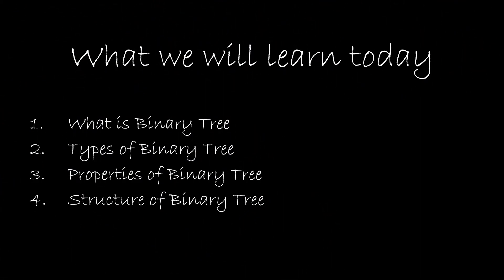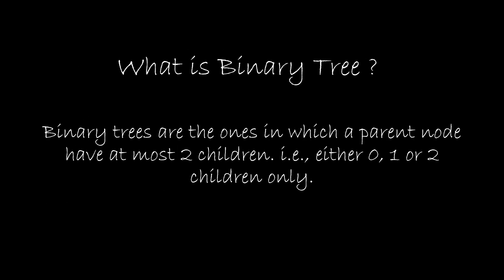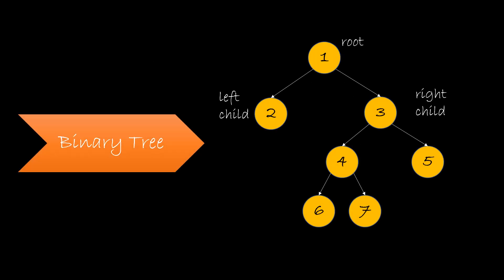Today we will learn about binary tree, its types, properties, and structure. So what is a binary tree? A binary tree is a type of tree in which a parent node has at most two children. That is, it can have either 0, 1, or 2 children only. For example, this can be termed as a binary tree, as each node is either a leaf node with no child or has a maximum of 2 children.